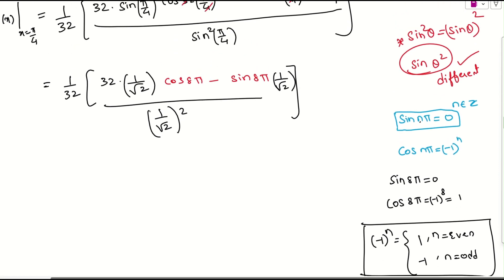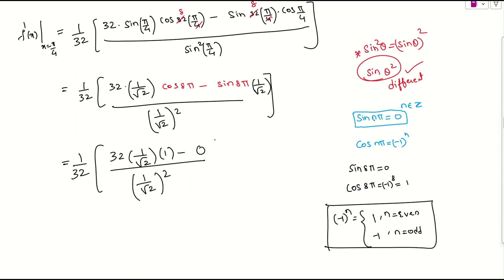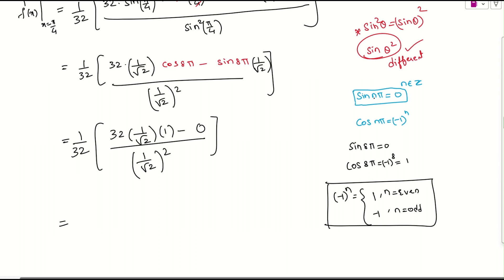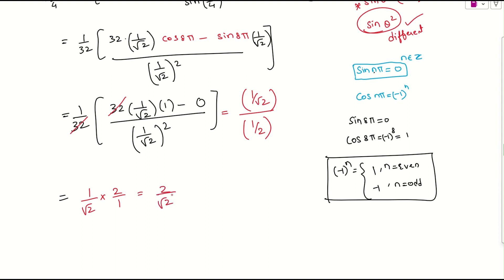Substituting: numerator becomes 1 over 32 times 32 times 1 over root 2 times 1 minus 0 times 1 over root 2, which simplifies to 1 over root 2. The 32s cancel. Denominator is 1 over root 2 whole squared, which equals 1 over 2. So the result is 1 over root 2 divided by 1 over 2, which is 2 over root 2. Rationalizing by multiplying by root 2 over root 2 gives 2 root 2 divided by 2, which equals root 2.